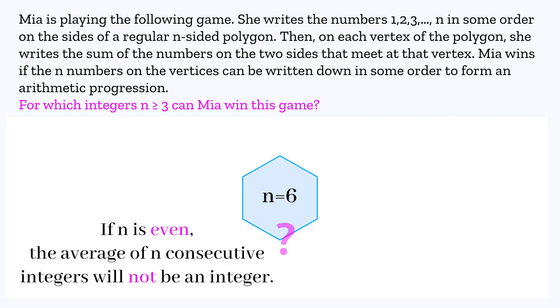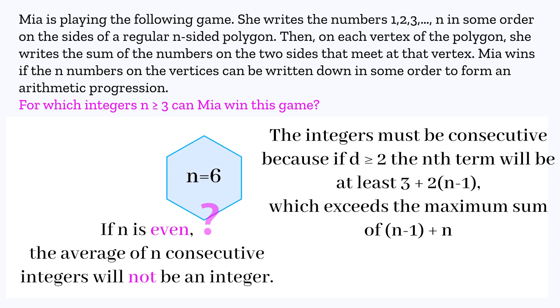So the average of the original numbers is (n+1)/2, so the average of our sums must be n+1. But if n is even, the average of n consecutive integers cannot be an integer. But the integers must be consecutive, because if d was 2 or greater, the nth term would be too big. It would exceed the maximum possible sum. So Mia can't win if n is even.